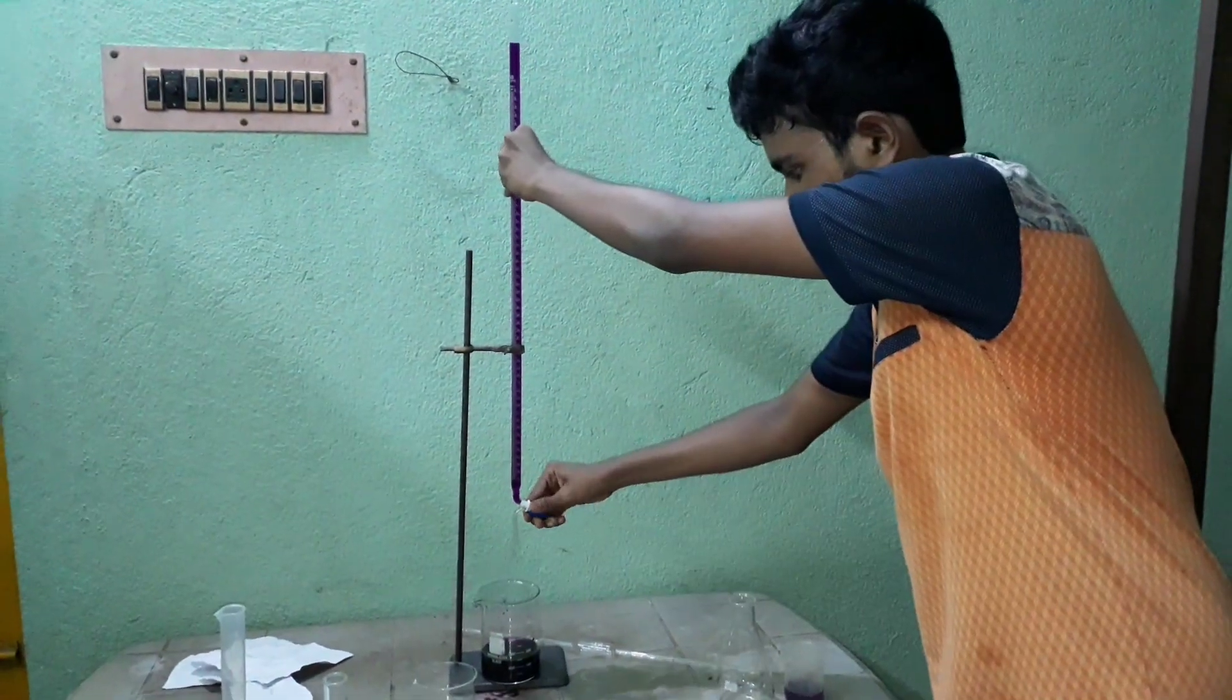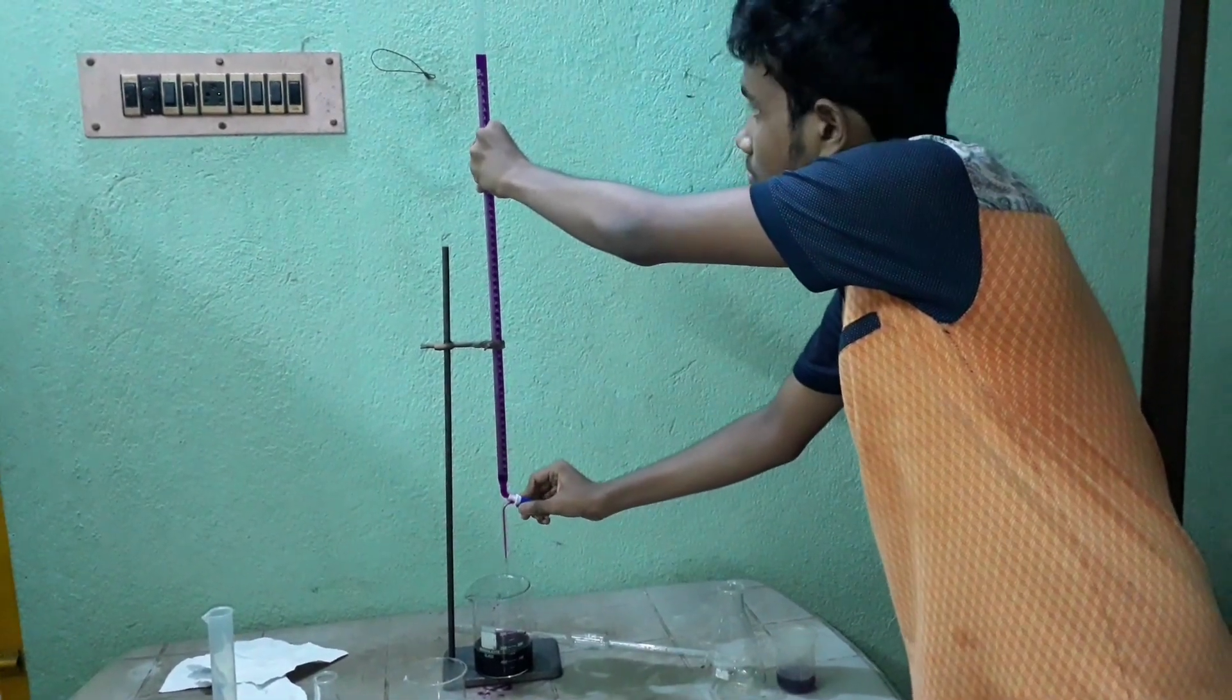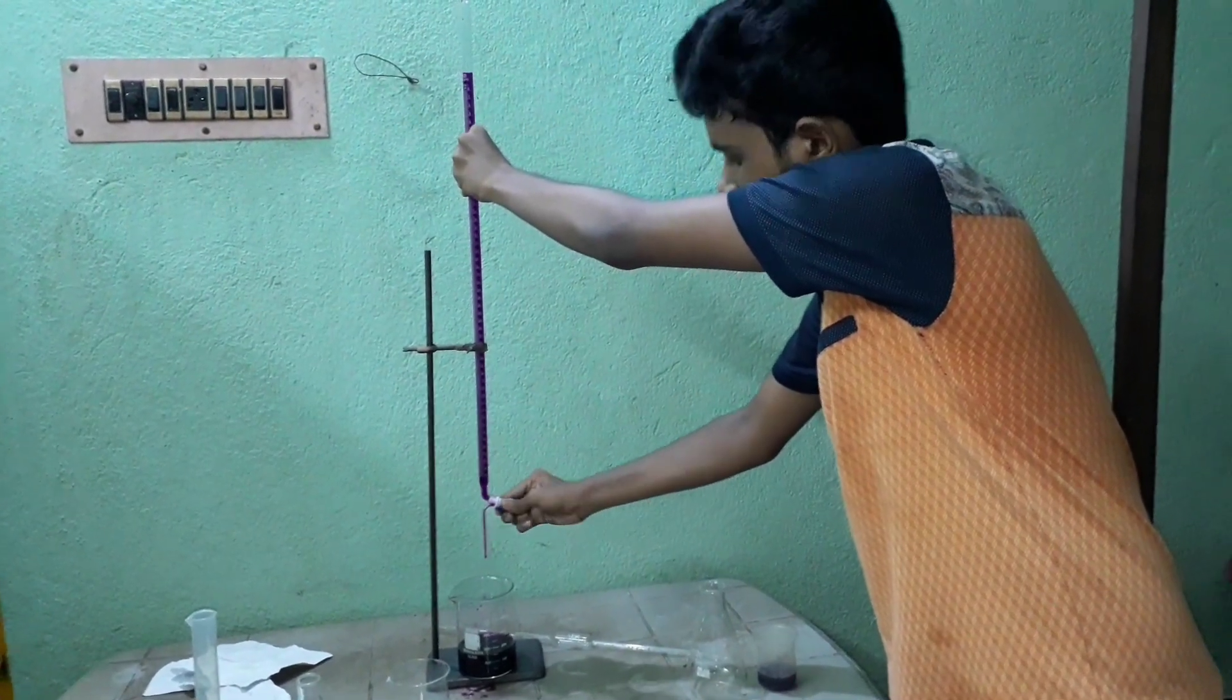Open the stopcock of burette and drip some of the solution and fill it again to remove all the air bubbles.